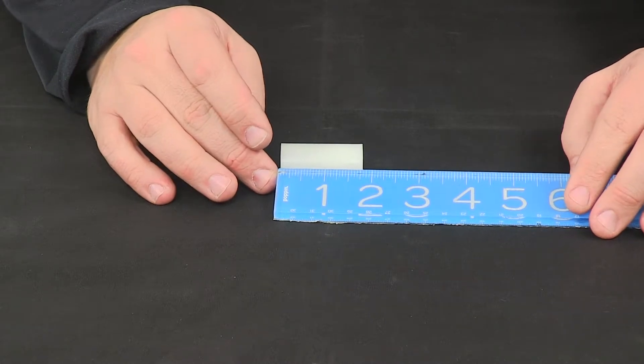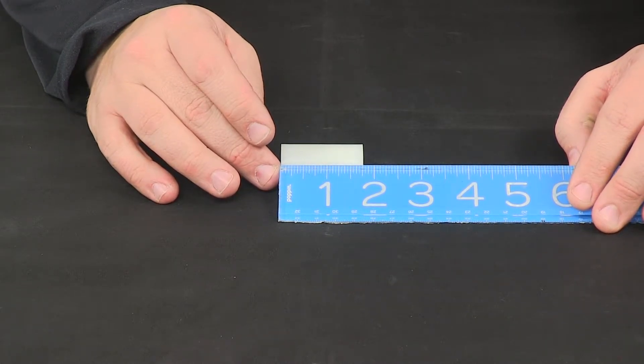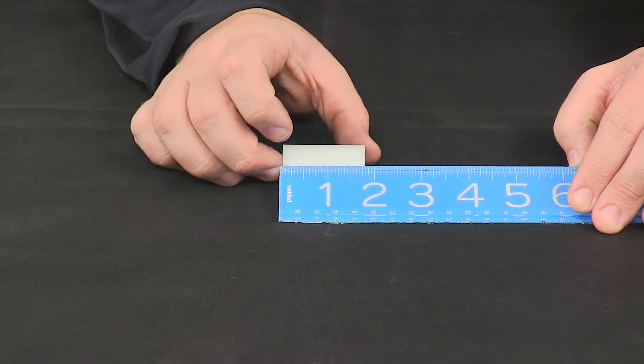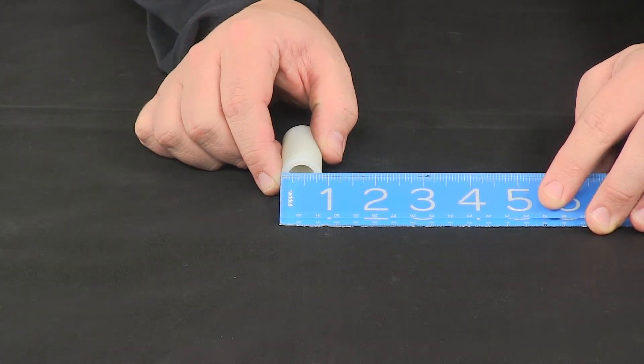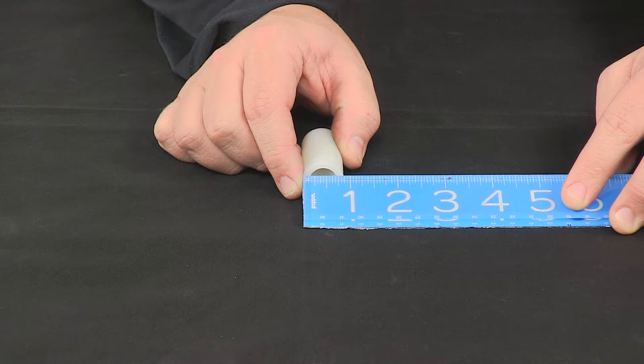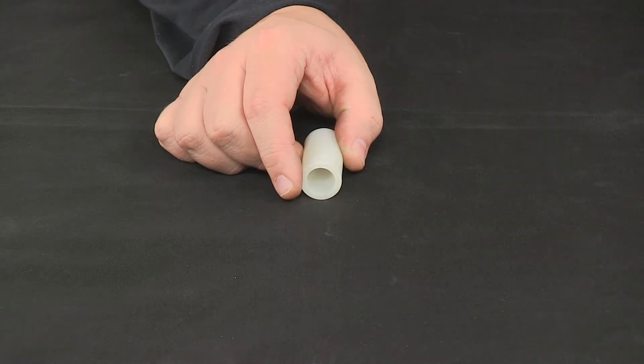Overall length measuring edge to edge is one and three quarters of an inch long. The outer diameter edge to edge measures seven eighths of an inch and then the inner diameter on this bushing is nine sixteenths of an inch.